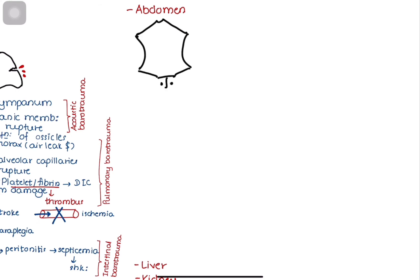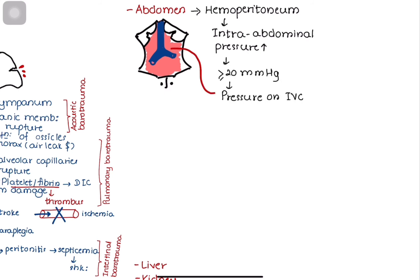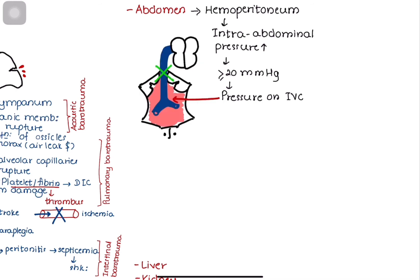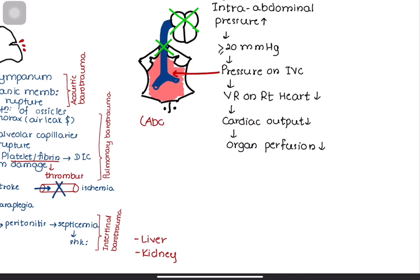Blunt injury to the abdomen causes multiple intra-abdominal organ injuries. Collections of blood in the peritoneum cause a rise in the intra-abdominal pressure. If the pressure rises further than 20 mmHg, it is high enough to compress the inferior vena cava. Therefore, venous return to the heart is reduced, leading to reduced cardiac output and organ perfusion. The organ dysfunction caused by intra-abdominal hypertension is known as abdominal compartment syndrome.